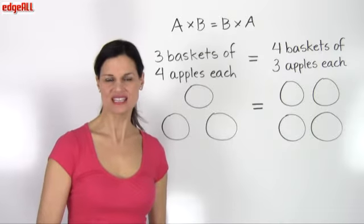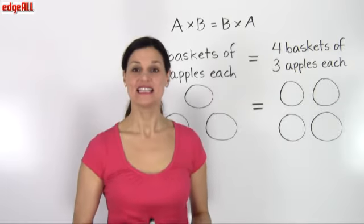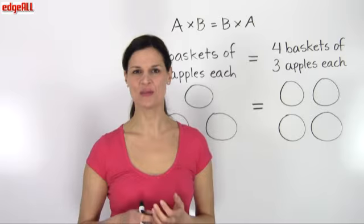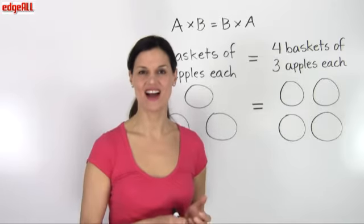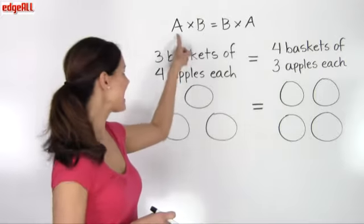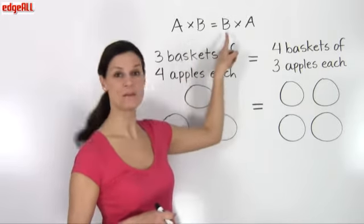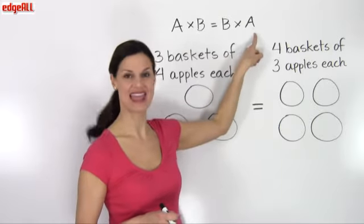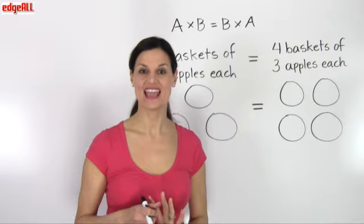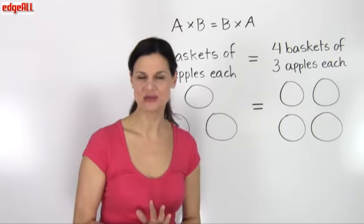The commutative property of multiplication tells us that the order in which numbers are multiplied does not affect the product. So A times B has the same answer as B times A. You can multiply two numbers in any order and the result will be the same.